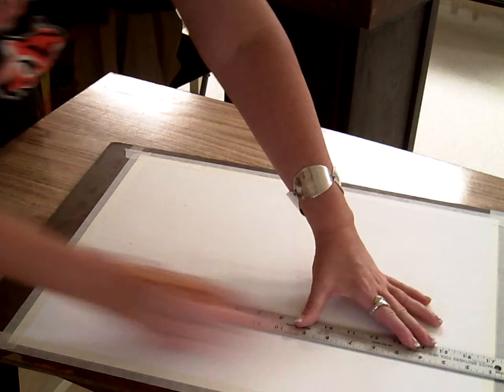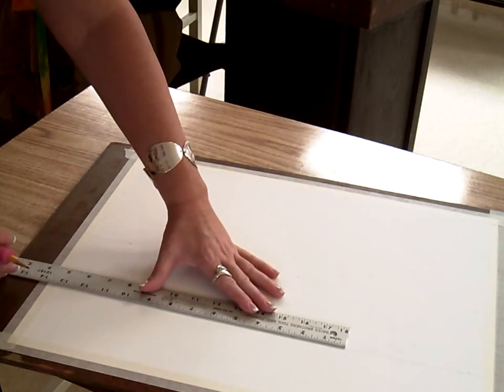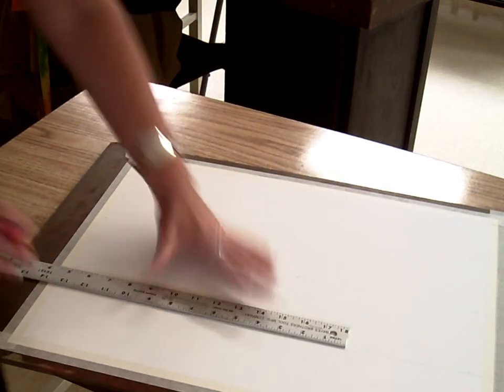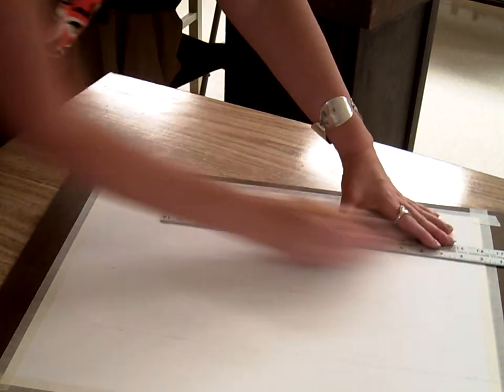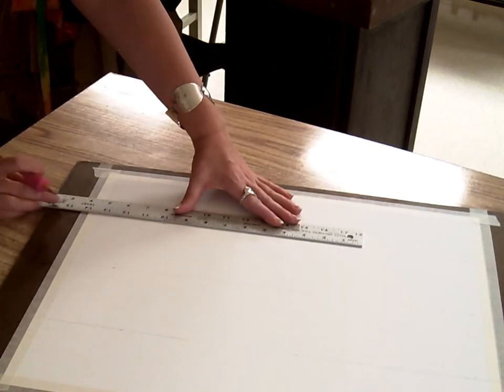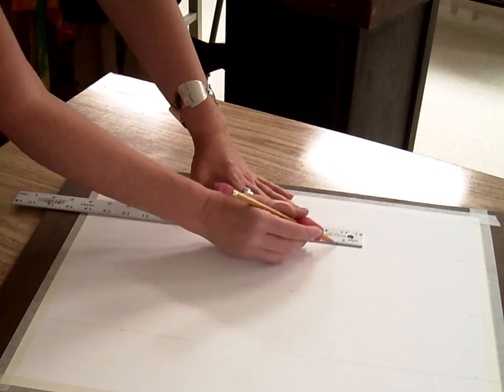You want to make sure that your grid lines are pretty light, because it's supposed to just be a tool or a technique to help us with scaling up our image, but not really supposed to be there in the final design.